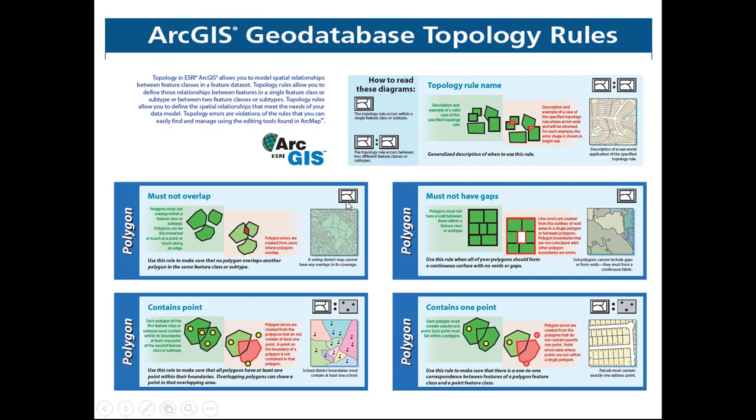That's a simple one with a single dataset, but let's talk through another scenario. Let's say we have two polygon datasets — states and counties — and we know that our states and counties should act as a nested egg, so all of our counties should fit nicely within the boundary of the state, and that state boundary should also mimic the outer boundary of all of those counties along the edge. We would use this handout to find rules that have icons for two datasets, since we're working with states and counties. We also know both are polygons, so we're looking for rules that have two polygon icons at the top.